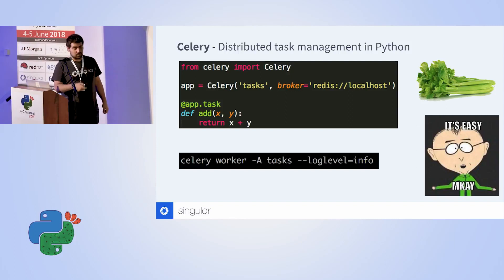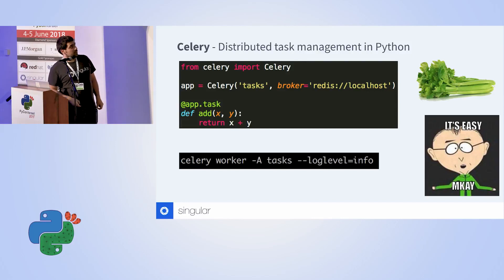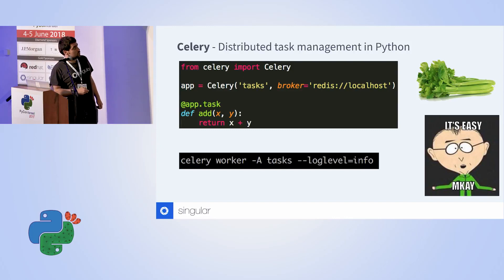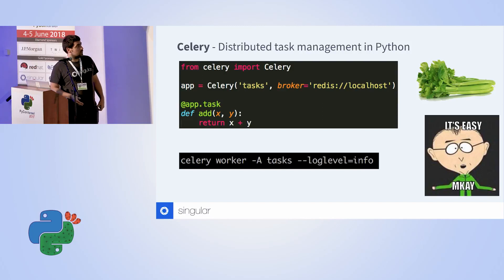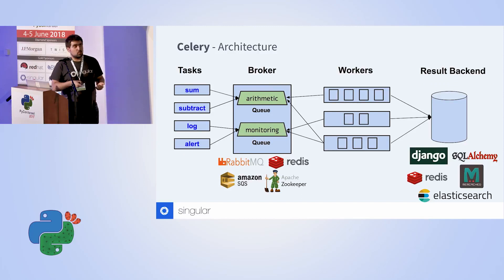To get started with Celery, all you need is a simple tasks file which contains mostly three things: first, an app — we define a global app and the main thing there is something called the broker, which is basically a means to transfer messages between different components of the system. It contains queues that you can add tasks to. The task definition is very straightforward — just Python functions with a special decorator — and then you run workers that connect to this broker.